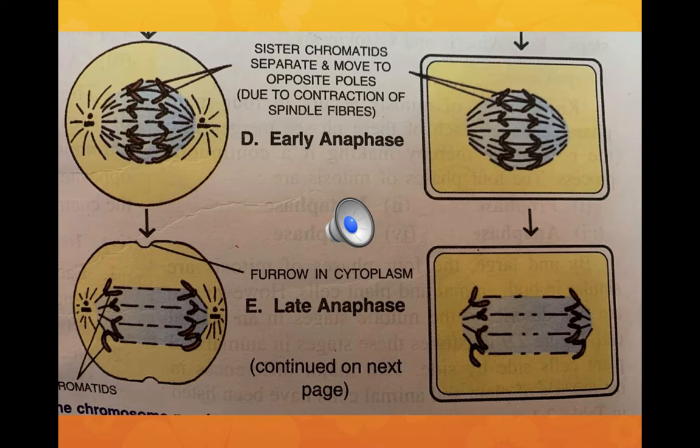In early anaphase, the centromeres attaching the two chromatids are splitting. The two sister chromatids of each chromosome separate and are drawn apart towards opposite poles, pulled by the shortening of the spindle fibers. In late anaphase, a furrow or ridge starts forming in the cell membrane at the middle in the animal cell.